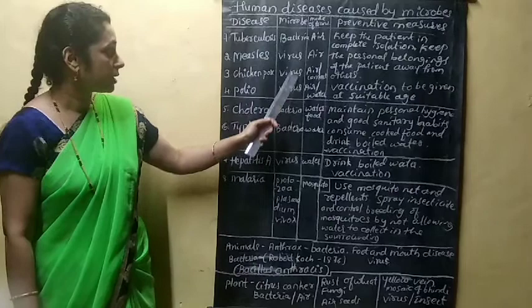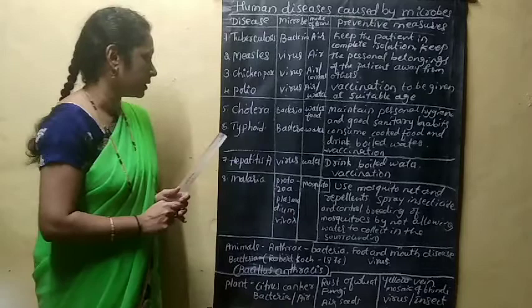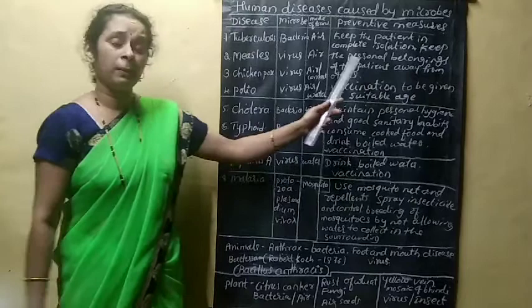Tuberculosis is a bacterial disease, while measles, chicken pox, and polio are viral diseases. You have to remember these categories and their preventive measures.